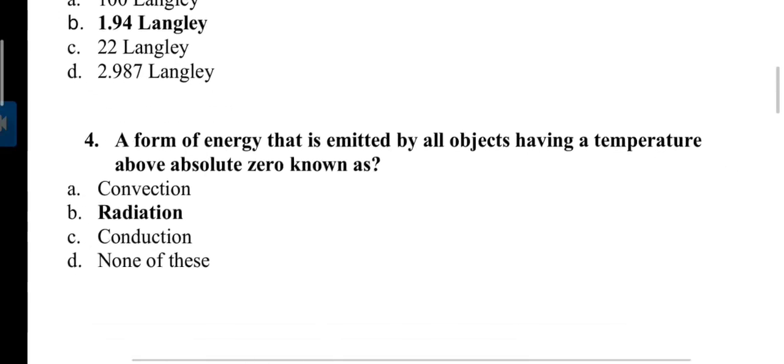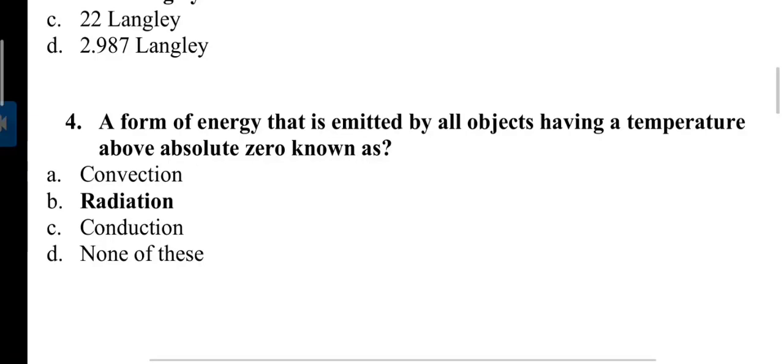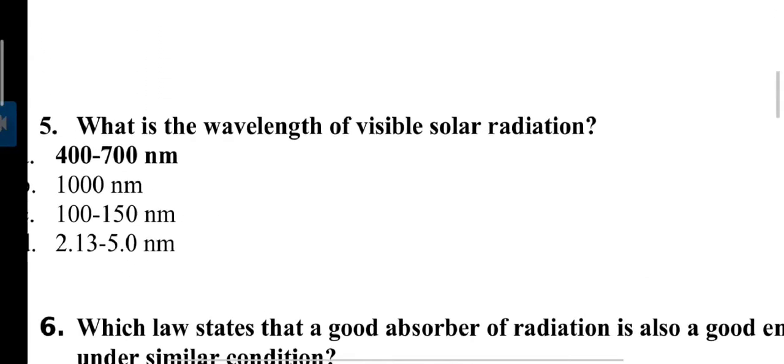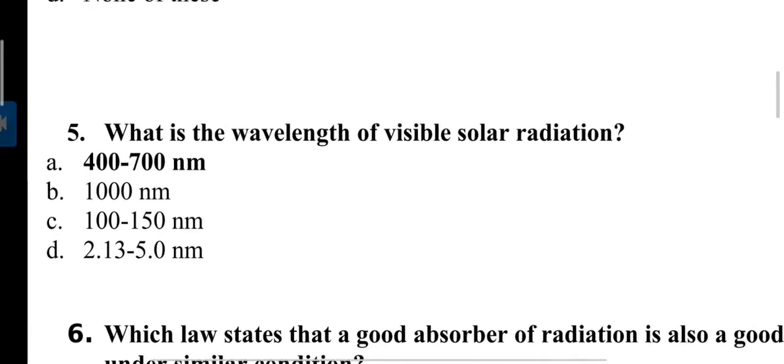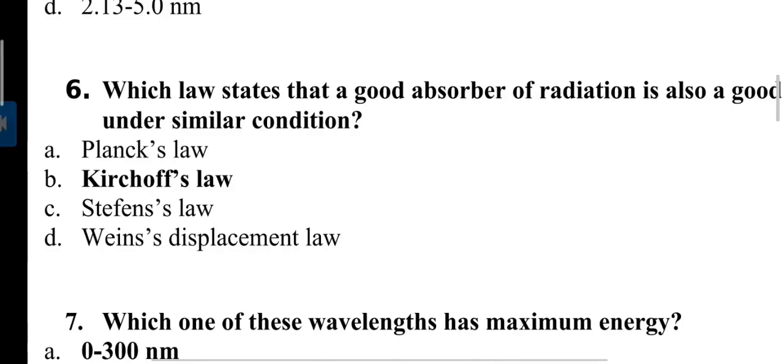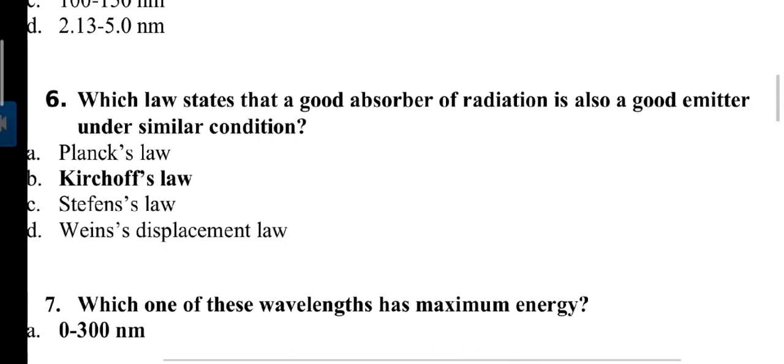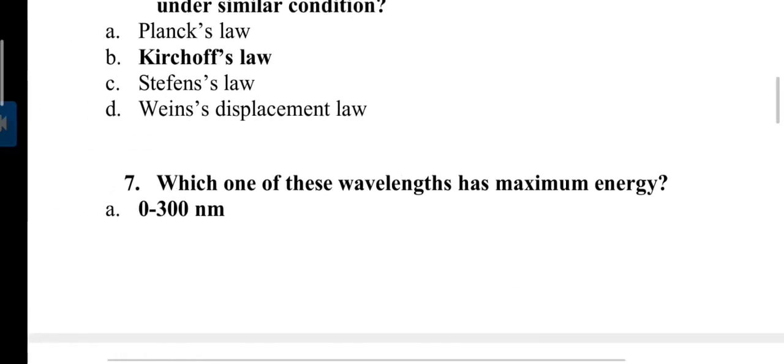Next question: A form of energy that is emitted by all objects having a temperature above absolute zero is known as radiation. Radiation is a method of heat transfer that does not rely upon any contact between source and object. Next question: What is the wavelength of visible solar radiation? Answer is 400 to 700 nanometers. We use this wavelength to see any objects or each other. Next question: Which law states that a good absorber of radiation is also a good emitter under similar condition? That is Kirchhoff's law, given in the year 1860.